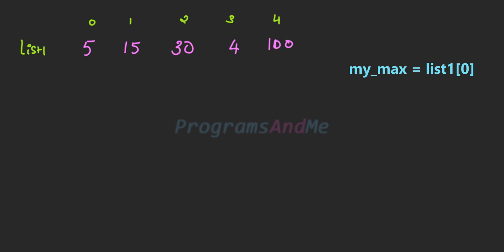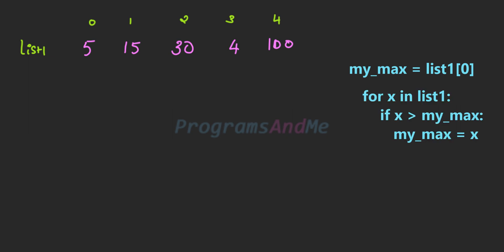To write this code: first take a variable mymax and store the first element of the list in it. Next we need to check whether each element of the list is greater than mymax. For that I will use a loop — for x in list1 — and inside the loop we check if x is greater than mymax. If it is greater, we update mymax to x; otherwise do nothing. I hope you understood how it works.